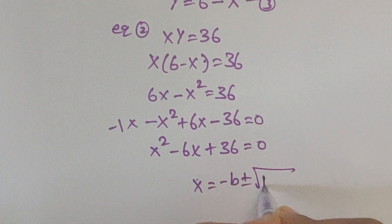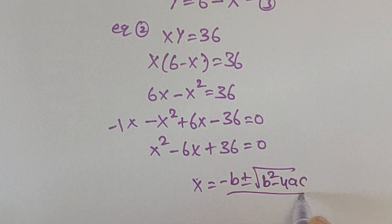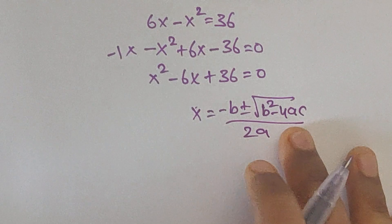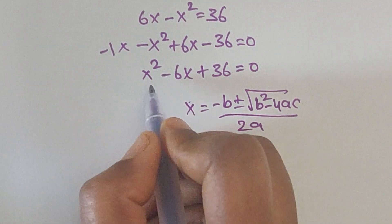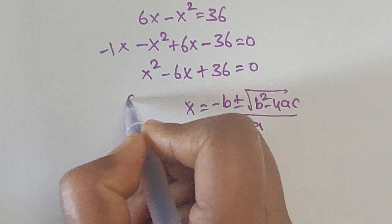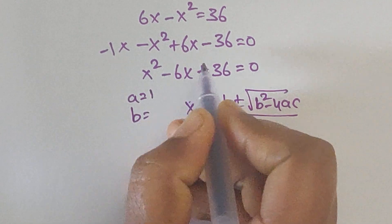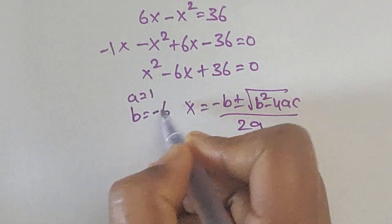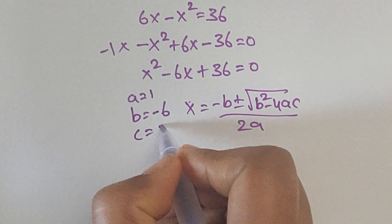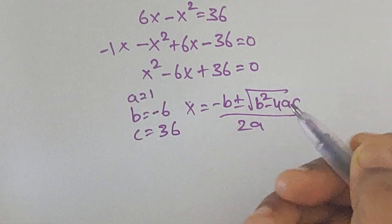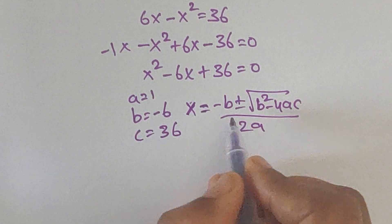We can apply the quadratic formula: x equals minus b plus or minus square root of b squared minus 4ac, all divided by 2a. Here the values are a equals 1, b equals minus 6, and c equals 36.